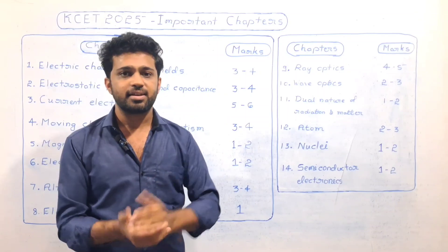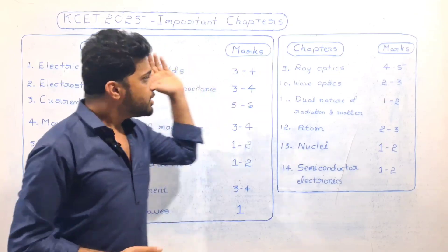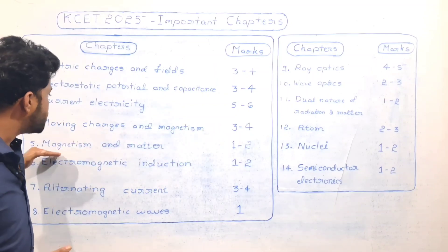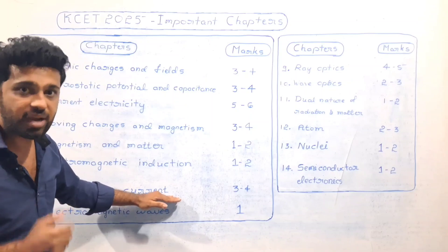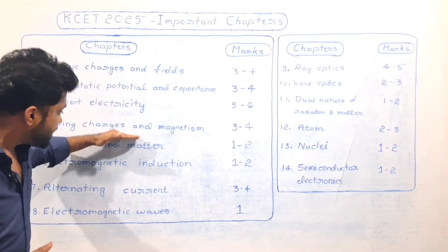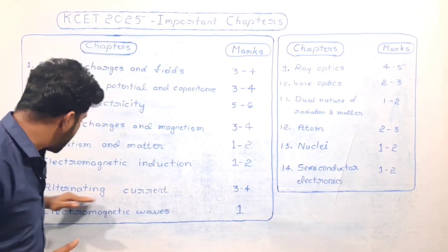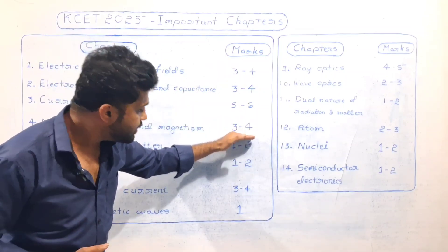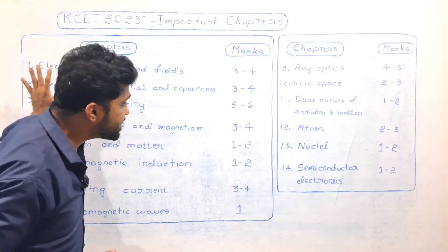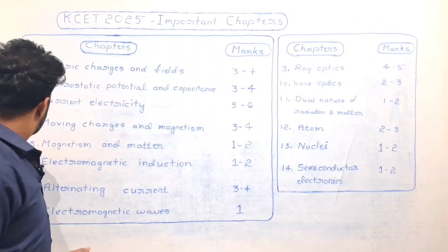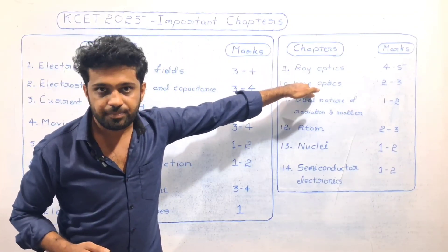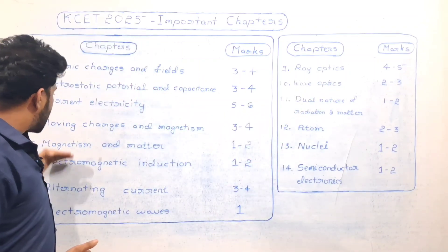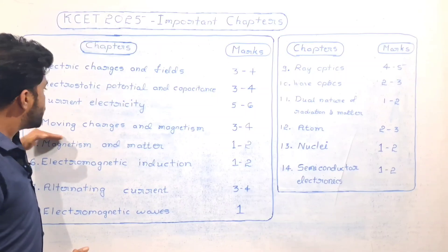For the midterm exam syllabus, I will cover the next three chapters: Magnetism and Matter, Electromagnetic Induction, and Alternating Current — these three chapters. Alternating Current is 3 to 4 marks. After these three chapters, we will cover the next set as well — 4 chapters in midterm exams. Then the next chapters are Ray Optics and Wave Optics.